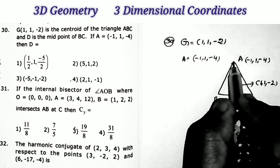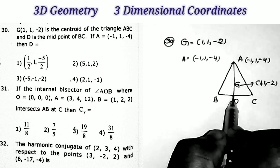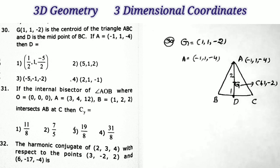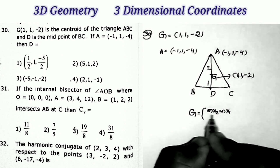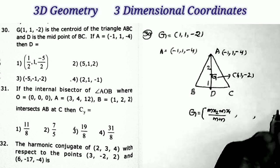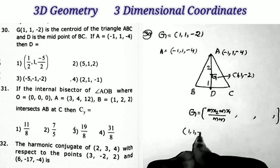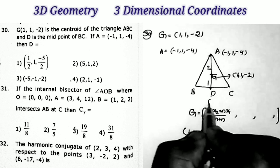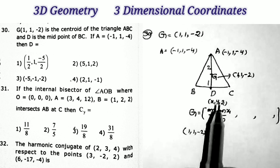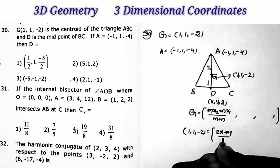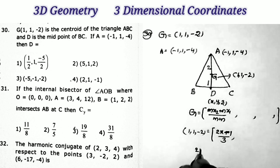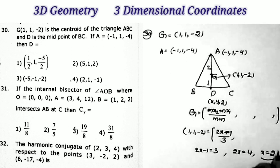Since D is the midpoint of BC, AD is the median. The centroid divides the median in the ratio 2:1. Using the section formula: G = (mx₂ + nx₁)/(m+n), (my₂ + ny₁)/(m+n), (mz₂ + nz₁)/(m+n). Here G = (1,1,-2). Let D = (x, y, z). So: 1 = (2x + 1·(-1)) / 3, which gives 2x - 1 = 3, then 2x = 4, therefore x = 2.